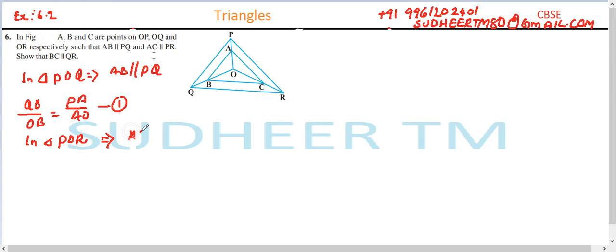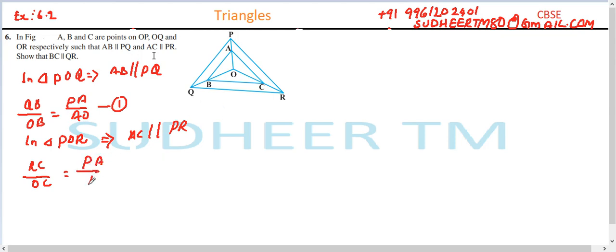Similarly, in triangle POR, it is given that AC is parallel to PR. So we can apply Thales' theorem: RC divided by OC is equal to PA divided by AO. Let this be equation number two.